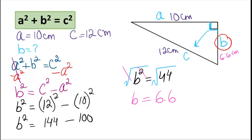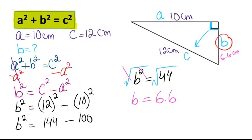Remember, whenever you're solving for the sides of a right triangle and you know two sides, you always use this formula: a squared plus b squared equals c squared. If you only know one side of the right triangle, then you use trig ratios, which I will show you in the next video. Thank you for watching and don't forget to hit subscribe so you don't miss any of my new lessons.